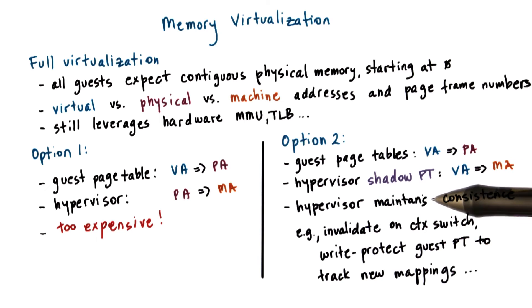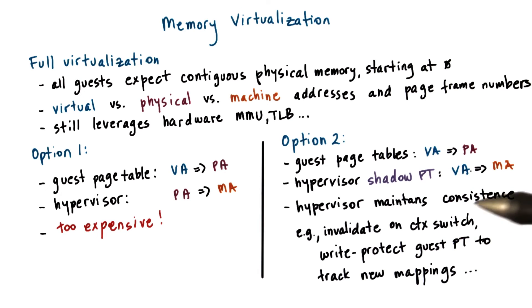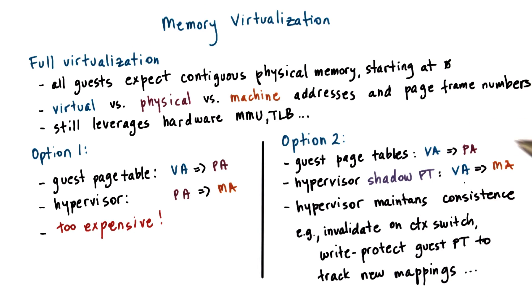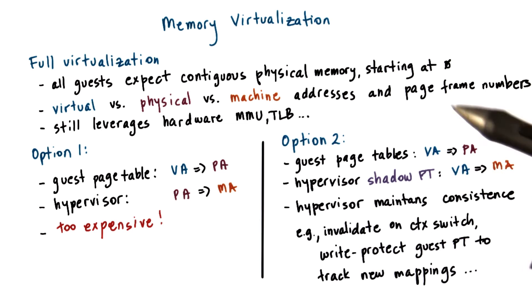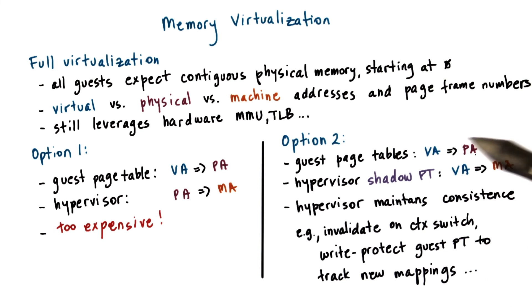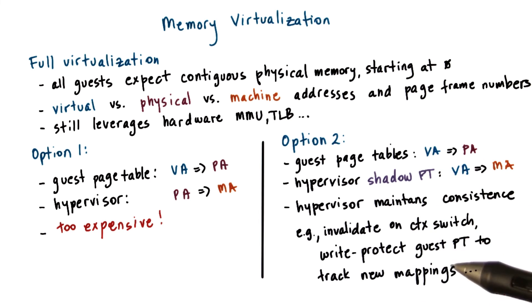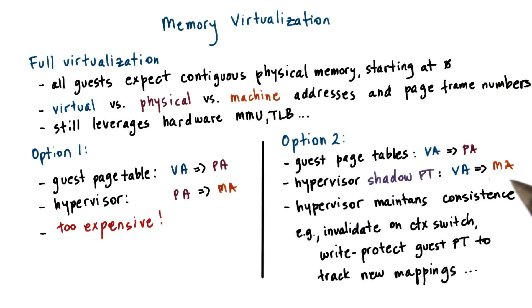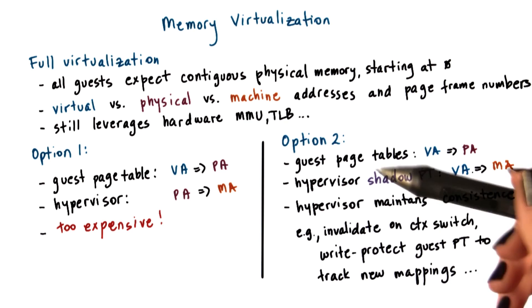The hypervisor will have to be responsible for maintaining consistency between these two page tables. It will employ mechanisms such as invalidating the currently valid shadow page table whenever there is a context switch, or write-protecting the guest page table to keep track of new mappings the guest operating system installs. This write protection is necessary so that whenever the guest OS tries to install a new virtual-to-physical address mapping in its page tables, it causes a trap to the hypervisor. The hypervisor then picks up that virtual address, associates the corresponding machine address, and inserts this mapping into the page table used by the hardware MMU — completely transparently to the guest operating system.